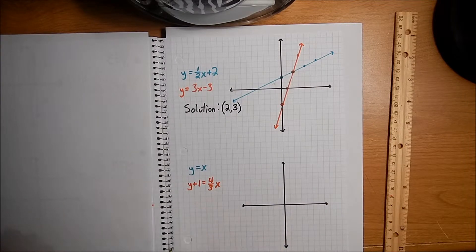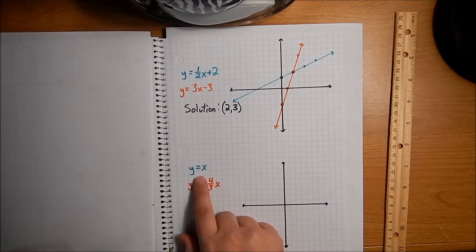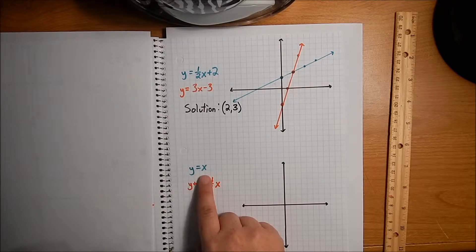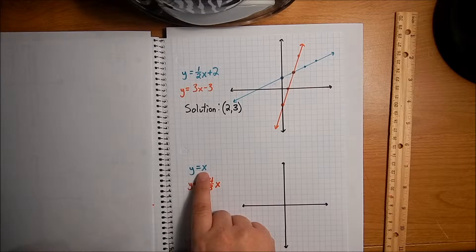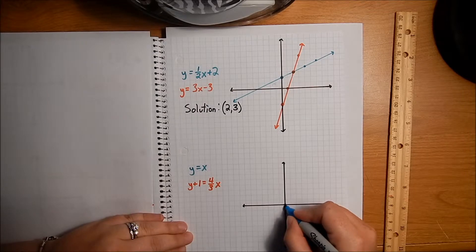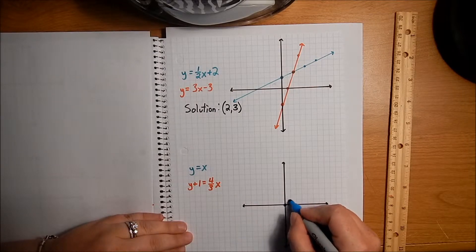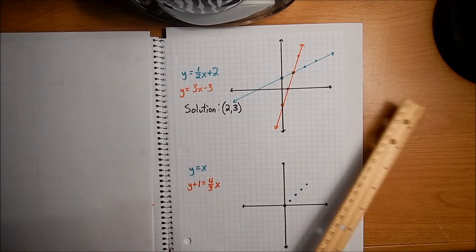Let's take a look at these two. I have y equals x. That's one of your most simple lines. Well, y equals x — the b is nothing, so we're just going to start at the origin. The slope is whatever is in front of the x; if there's nothing there, we assume it's a 1. So I'll start at the origin and follow the slope of up 1 over 1, putting a couple of dots.